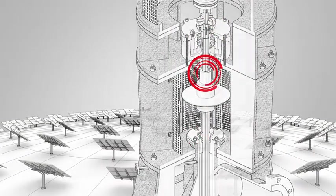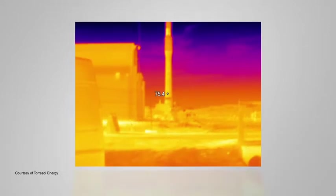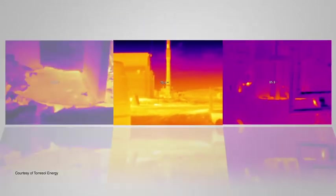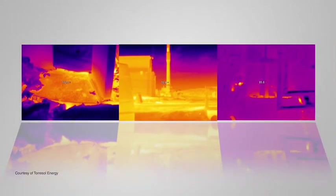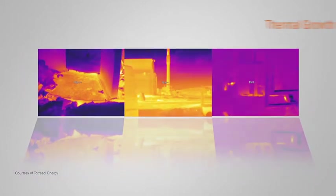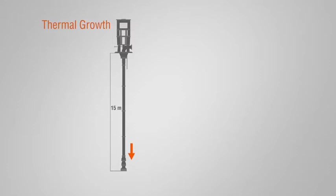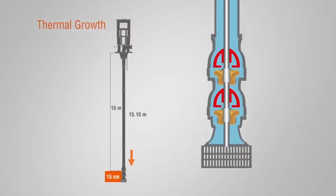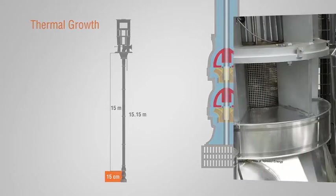FlowServe engineers use computer-aided thermal analysis to ensure temperature gradients, growth rates and stresses are understood and within design limits. At operating temperatures, a pump with a 15-meter column can grow as much as 15 centimeters. Impeller clearances must be engineered to prevent binding and ensure efficient operation.